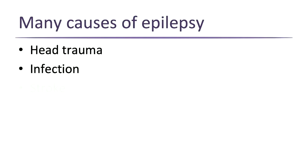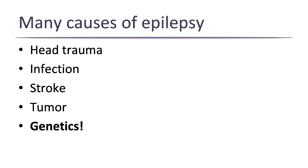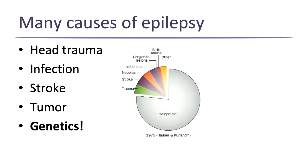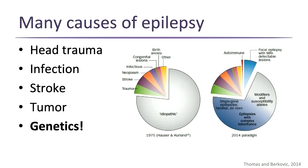There are many different causes of epilepsy — anything that injures the brain can cause seizures, including head trauma, infections like meningitis, and tumors. Sometimes a tumor's first sign is a seizure. And of course, genetics. In the 1970s, most epilepsy was termed idiopathic — a medical term for 'we don't know.' By 2014, with advances in various studies, it became clear that a lot of that idiopathic epilepsy is actually due to genetic factors — and even some structural causes can be due to genetics as well.